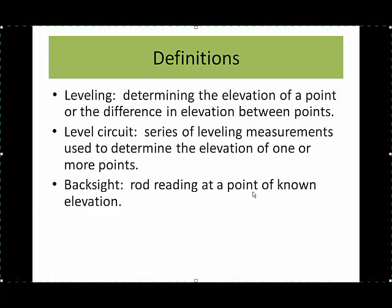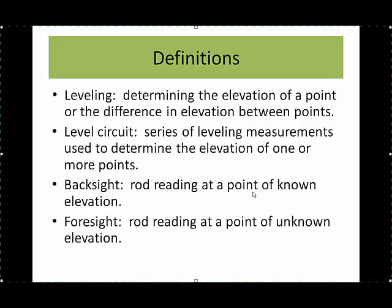A backsight is one of those leveling measurements, one of the series. In fact, a backsight is a rod reading that we take on a point of known elevation. Conversely, a foresight is a rod reading on a point of unknown elevation. We use these at least in pairs, for every backsight we typically have at least one foresight.